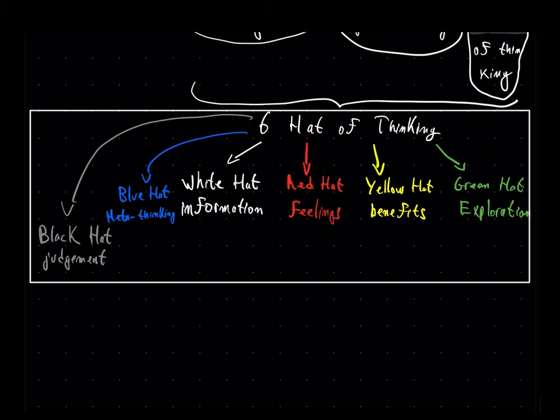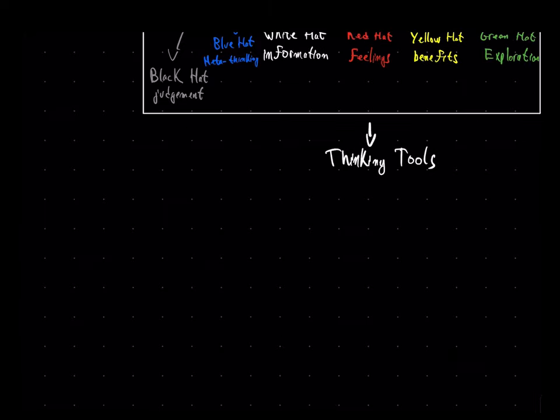Now, in addition to these hats of thinking, the author discusses these thinking tools. There are kind of specific expressions of these thinking hats used for specific situations. For example, the CAF tool, which is the considering all the factors tool.